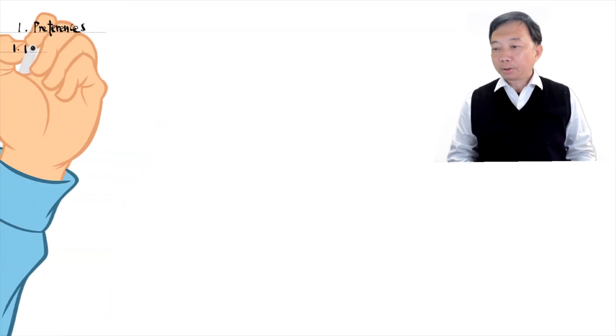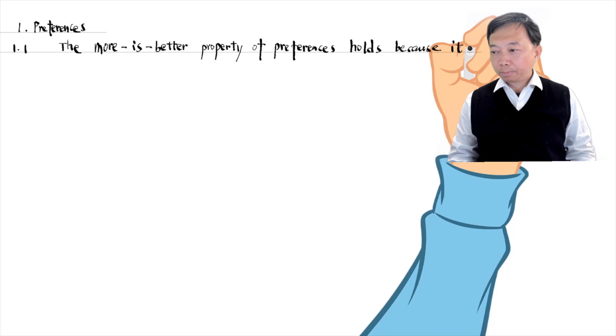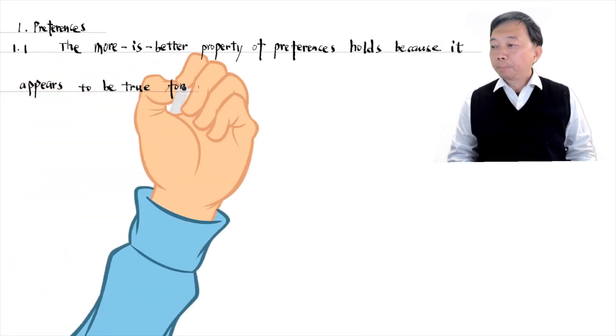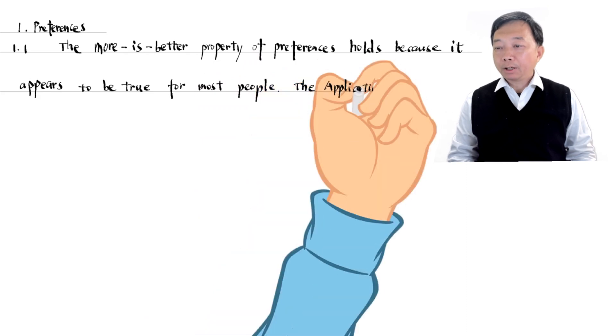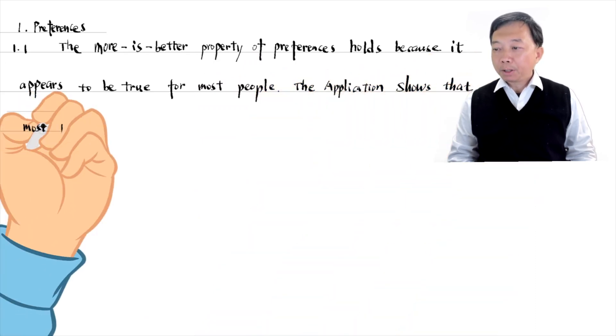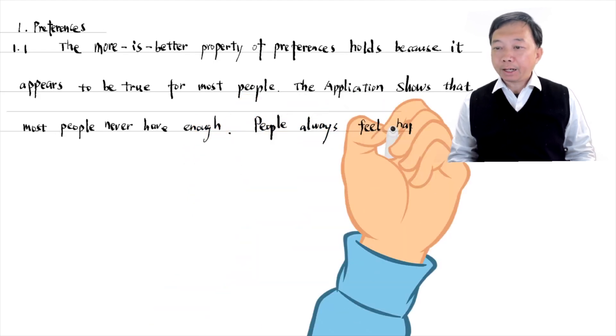The more is better property of preferences holds because it appears to be true for most people. The application shows that most people never have enough. People always feel happier if they become richer.